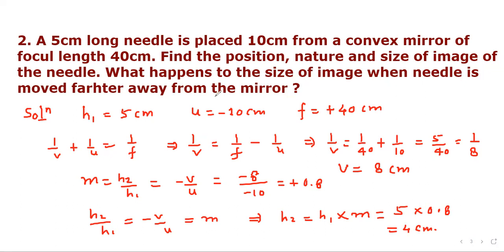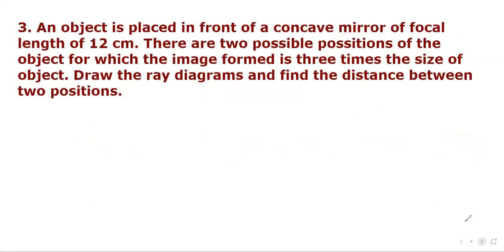As the needle is moved further away from the mirror, the image shifts towards the focus and its size goes on decreasing. When the needle is very far away, it appears almost as a point image at the focus.